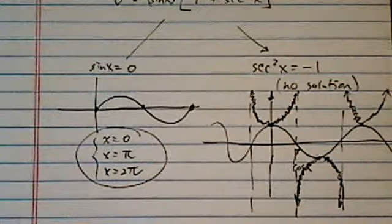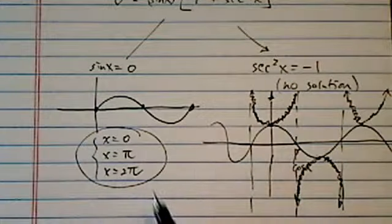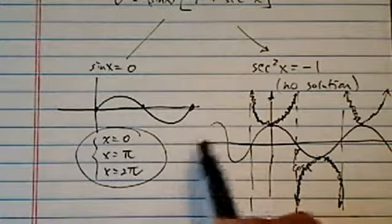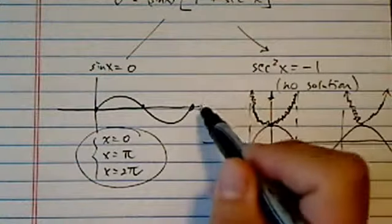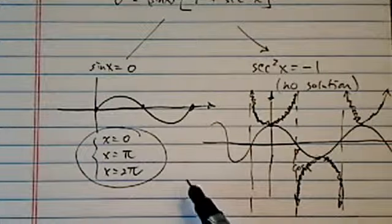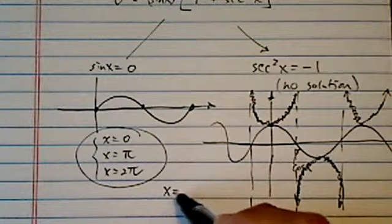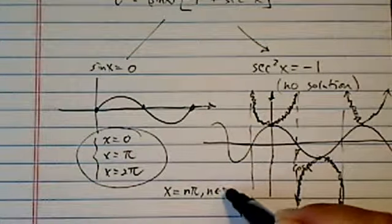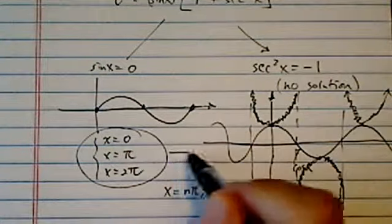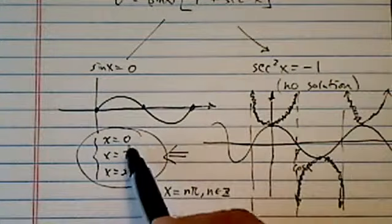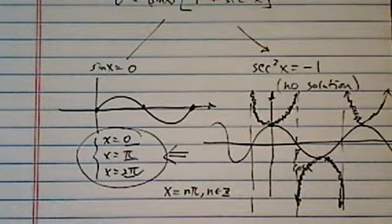So anyhow, for this particular problem solution, zero pi and two pi. A general solution, if they did not ask you to stay in zero to two pi, then your general solution is x equal to n pi, and n belongs to the integers. But for this particular problem, we've given zero to two pi restraint here, so zero pi and two pi.